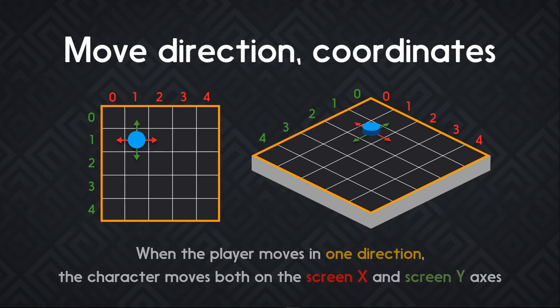As far as the player is concerned, here's a simple diagram showing how movement in the top-down world is mapped to the isometric one. When we move on the grid to the right, the character will move to the right and a bit to the bottom on the isometric map. If we move to the top, it will move to the right and a bit to the top as well. In other words, when the player moves in one direction — right, top, bottom, or left — the character will move on both the X and Y axis on the screen.